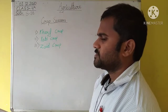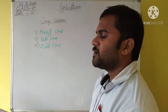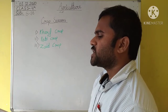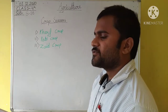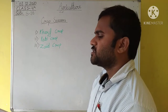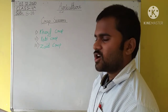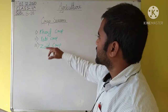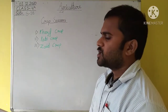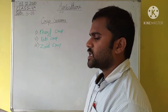Kharif season remains from June to September. The crops grown in this season are called Kharif crops. The main Kharif crops are rice, maize, jowar, millet, groundnut, jute, and cotton.